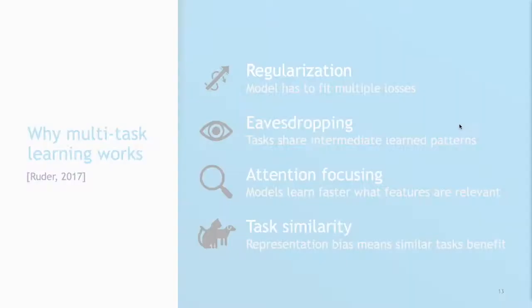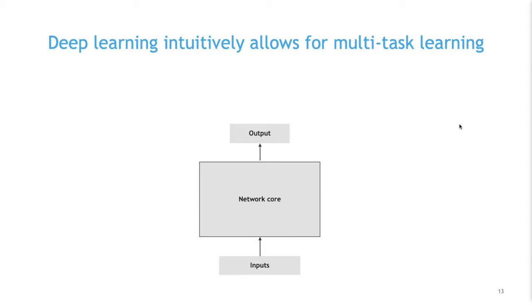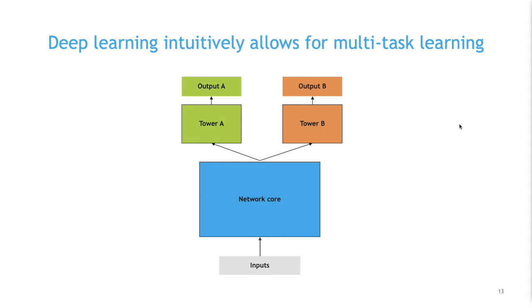One way to do multitask learning is with neural networks — it's actually quite intuitive. In a normal neural network we have some inputs, a core with dense layers and padding, and then an output. If we extend that, we can add as many outputs as we want — output A and output B in this case. We can also add separate layers before these outputs, so we have a shared part first, then split it and have something specific to each output.